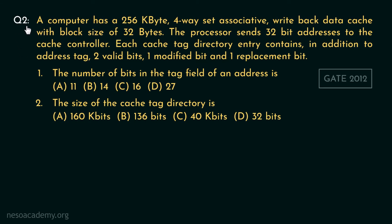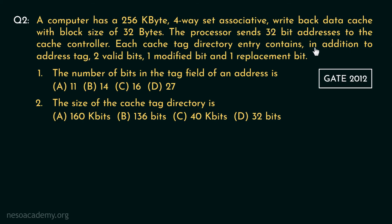Consider question number 2 — it came in the GATE 2012 paper. The question states: a computer has a 256 kilobyte 4-way set associative write-back data cache with a block size of 32 bytes. The cache size is 256 kilobytes, it's 4-way set associative, and each cache line is 32 bytes. The processor sends 32-bit addresses to the cache controller, so the physical address is 32 bits. Each cache tag directory entry contains, in addition to the address tag, two valid bits, one modified bit, and one replacement bit. First they ask about the number of bits in the tag field.